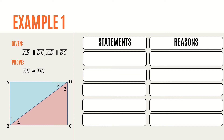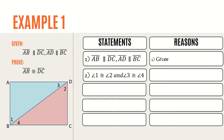For our first statement, let us begin with the given: side AB is parallel to side DC, and side AD is parallel to side BC. The reason for this is it is given. For our second statement, since side AB is parallel to side DC and side AD is parallel to side BC, we can say that angle 1 is congruent to angle 2 and angle 3 is congruent to angle 4. The reason is: if two parallel lines are cut by a transversal, then the alternate interior angles are congruent.